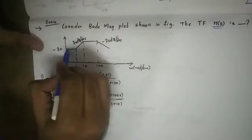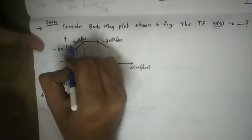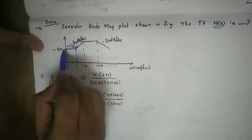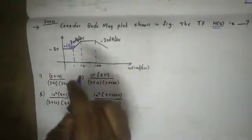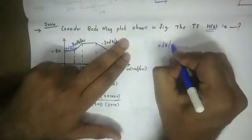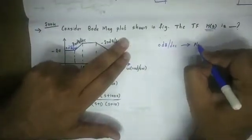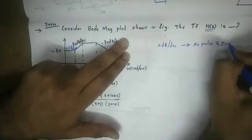First of all, there is a parallel line. A parallel line means the slope is 0 dB per decade — parallel to the x-axis. So dy on the y-axis is 0, meaning 0 divided by dx is 0 dB per decade. The initial slope is 0 dB per decade, which means there are no poles and zeros at the origin.